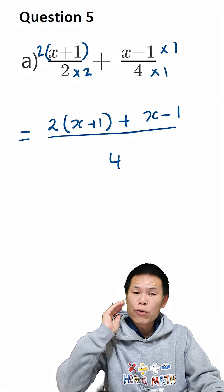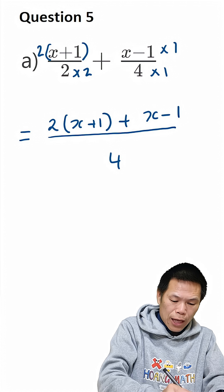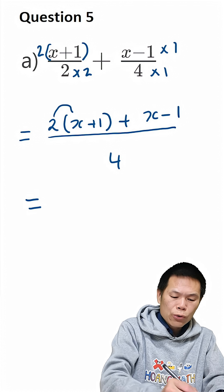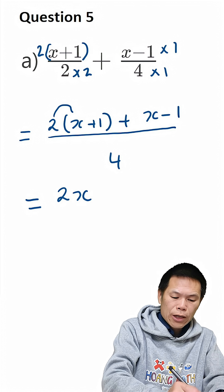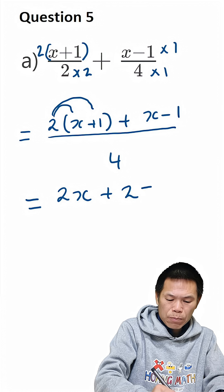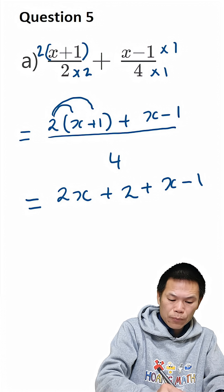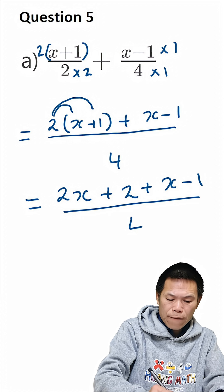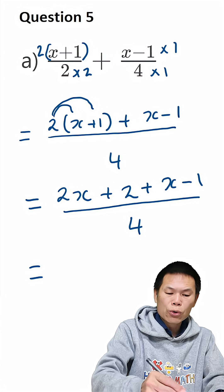Now I just need to remove the brackets. So that is equal to 2 times x is 2x, 2 times 1 is 2. And we plus x minus 1 over 4. So that is equal to,